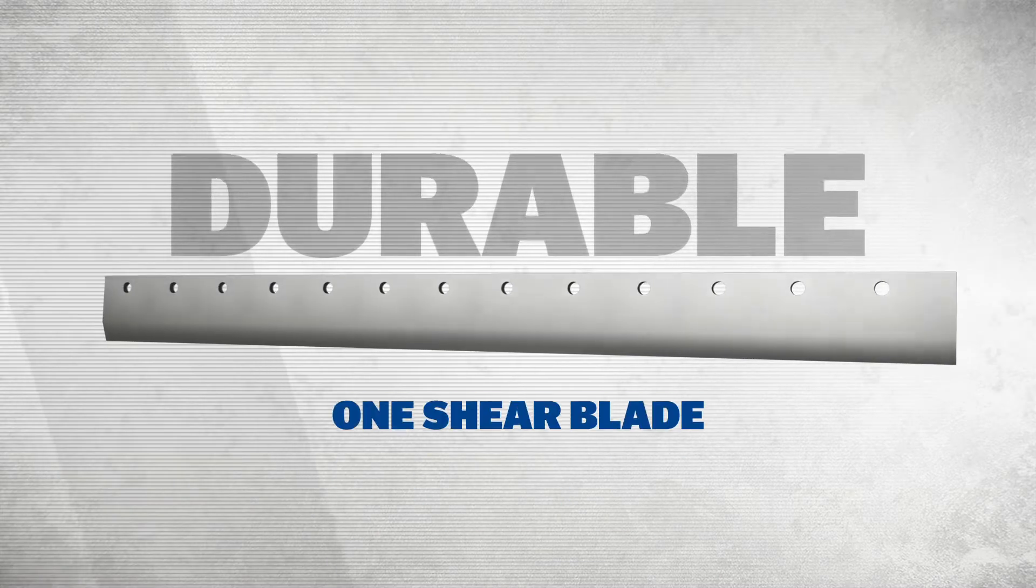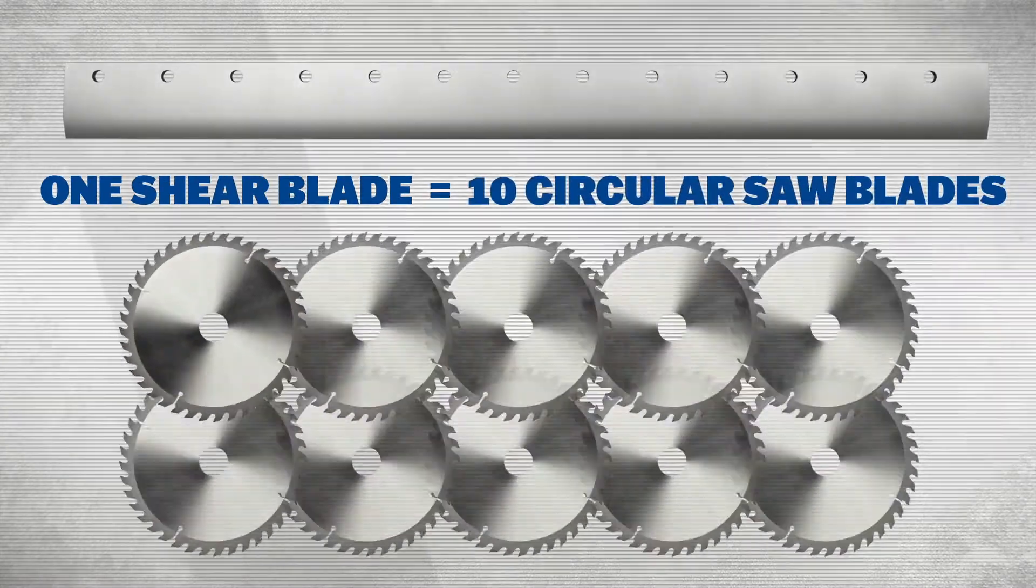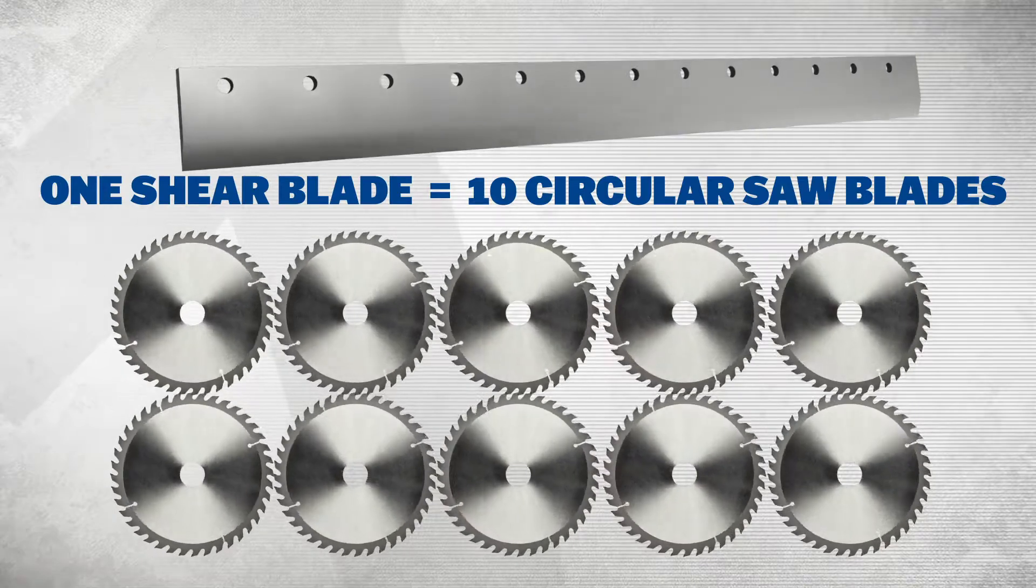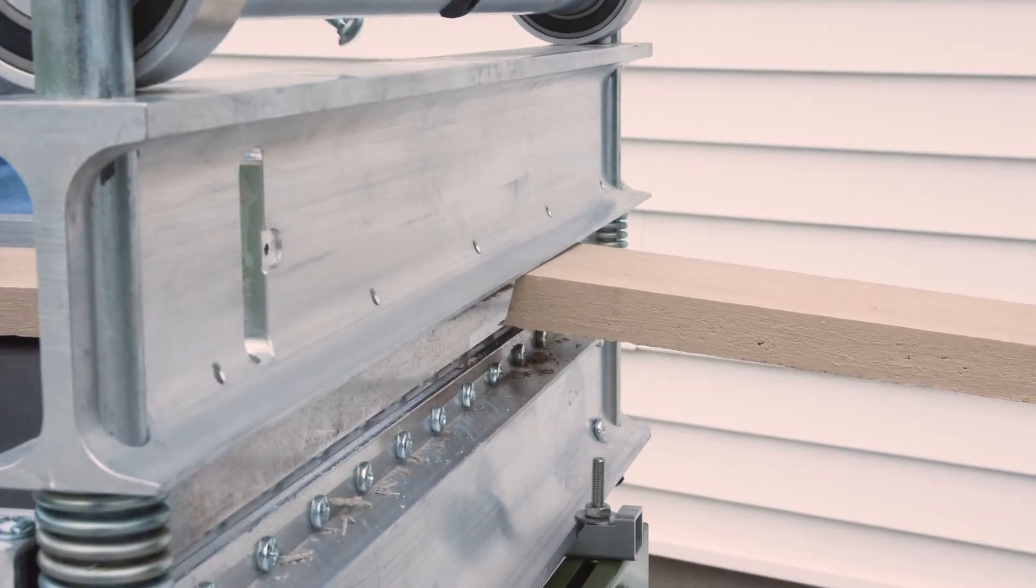One Bullet by Marshalltown siding blade lasts 10 times longer than a circular saw blade, saving you money over the course of the year. The Bullet by Marshalltown siding shears cuts fiberboard,